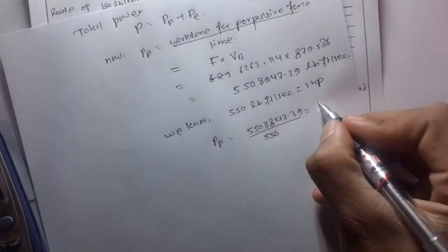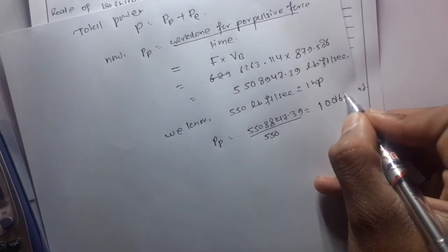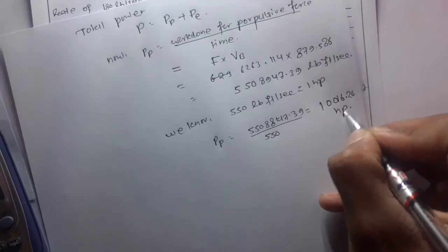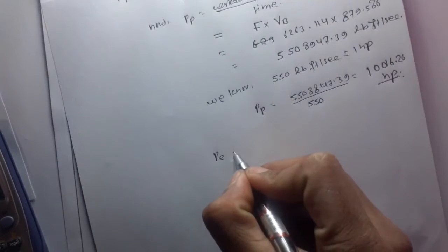We know that 550 lb-ft per second is equal to 1 horsepower.